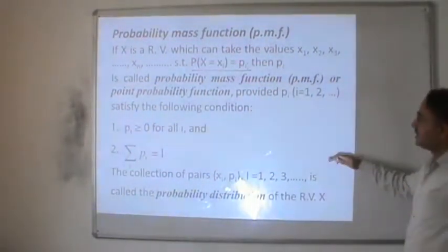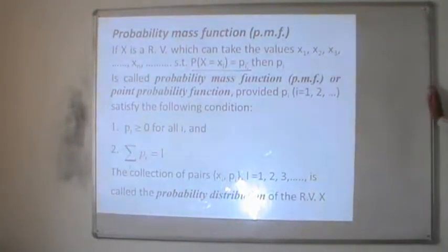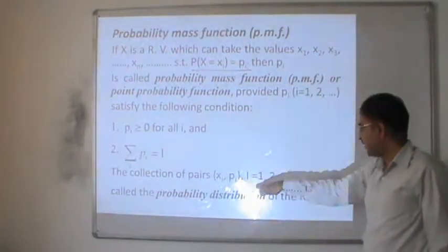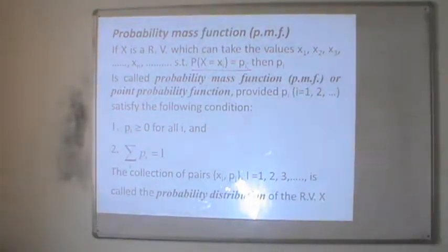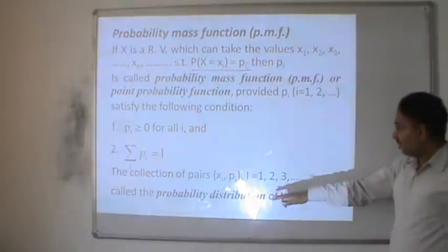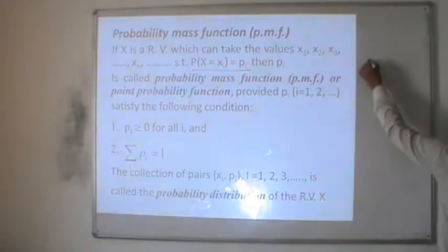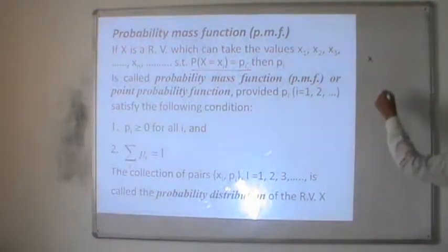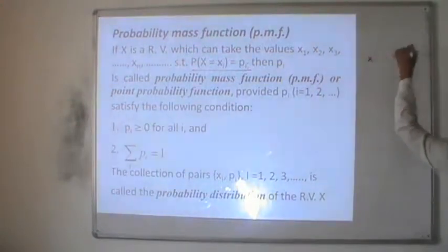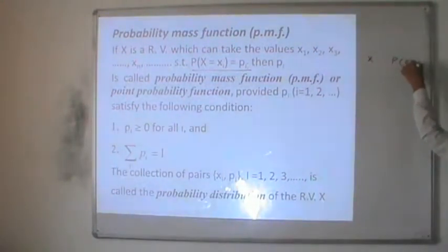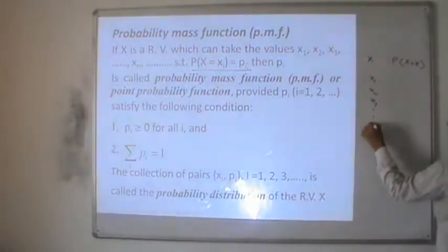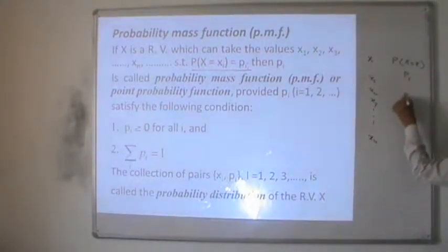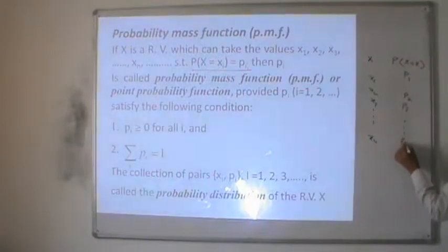If these two conditions are satisfied, then such a function is known as the probability mass function or point probability function. The collection of xi and pi, where i varies from 1, 2, 3, and so on, is called the probability distribution of the random variable. The probability distribution of a random variable x is displayed in a table where the first column represents the values of the random variable and the second column presents their probabilities: x1, x2, x3, ..., xn with p1, p2, p3, ..., pn.